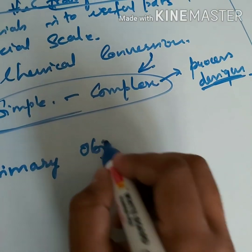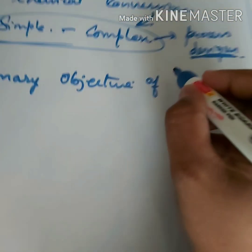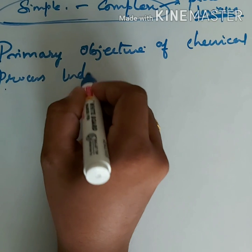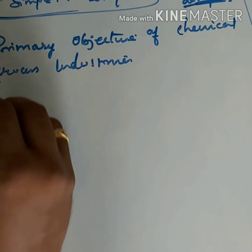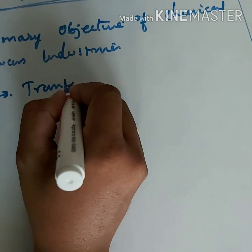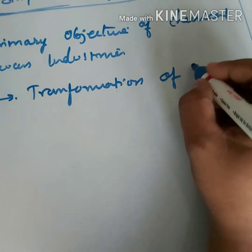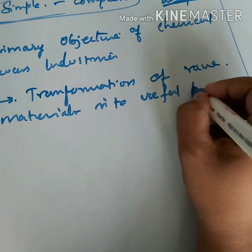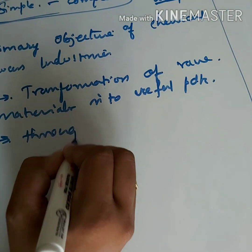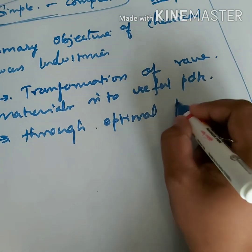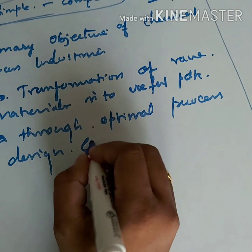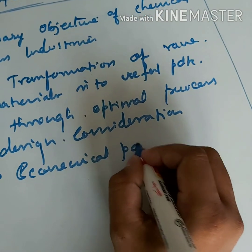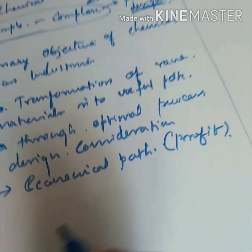The next topic is: what are the primary objectives of chemical process industries? These are confined to three points: one is transformation of raw materials into useful products; the second is through optimal chemical process design considerations; and the third is an economical path, that is, profit.